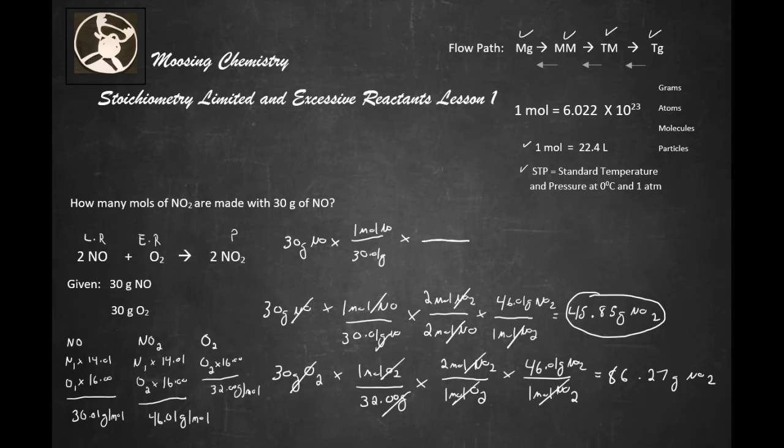Then we're going to convert our ratio. So we have 2 moles of NO on the bottom and we get our 2 moles on top here, so we're converting it into moles of NO2. Moles cancel moles, grams cancel grams. And the answer is going to be—let's go ahead and do our calculator real quick—roughly 1.0 moles of NO2.